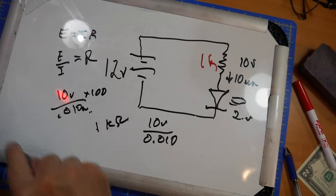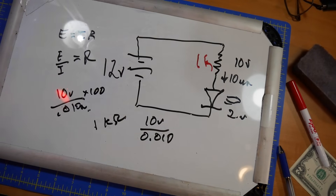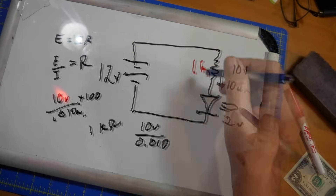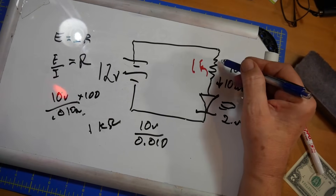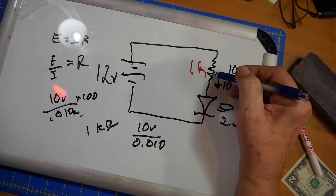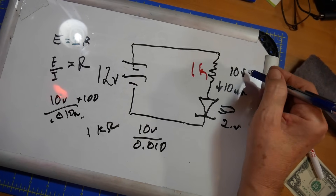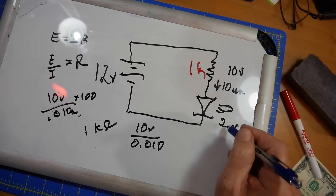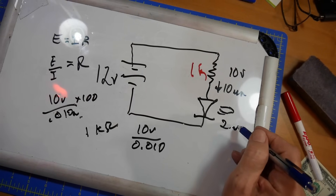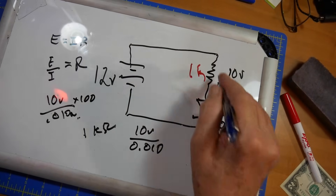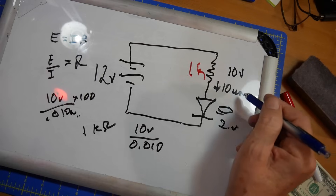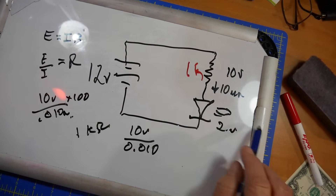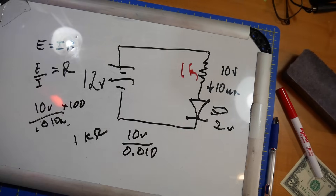This is an example from chapter 5, showing how you bias a light-emitting diode — this is called the current-limiting resistor. There are 10 volts across the resistor and 2 volts across the LED, both at 10 milliamps. The current is the same all the way around because they are in series. So we end up with a 1k resistor.